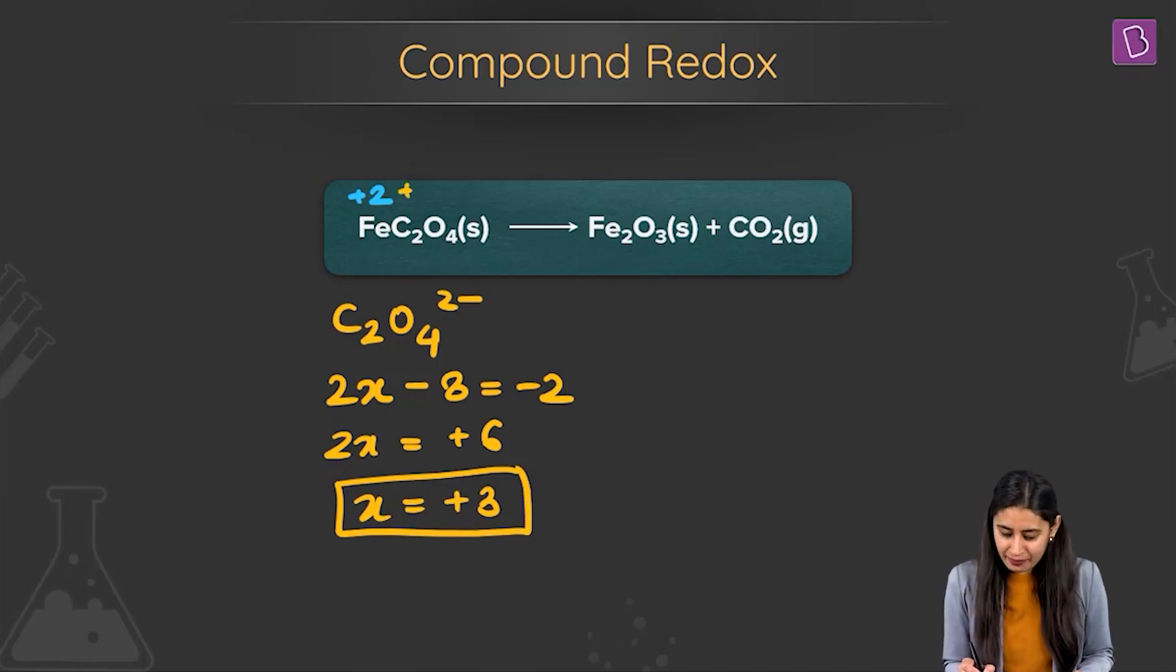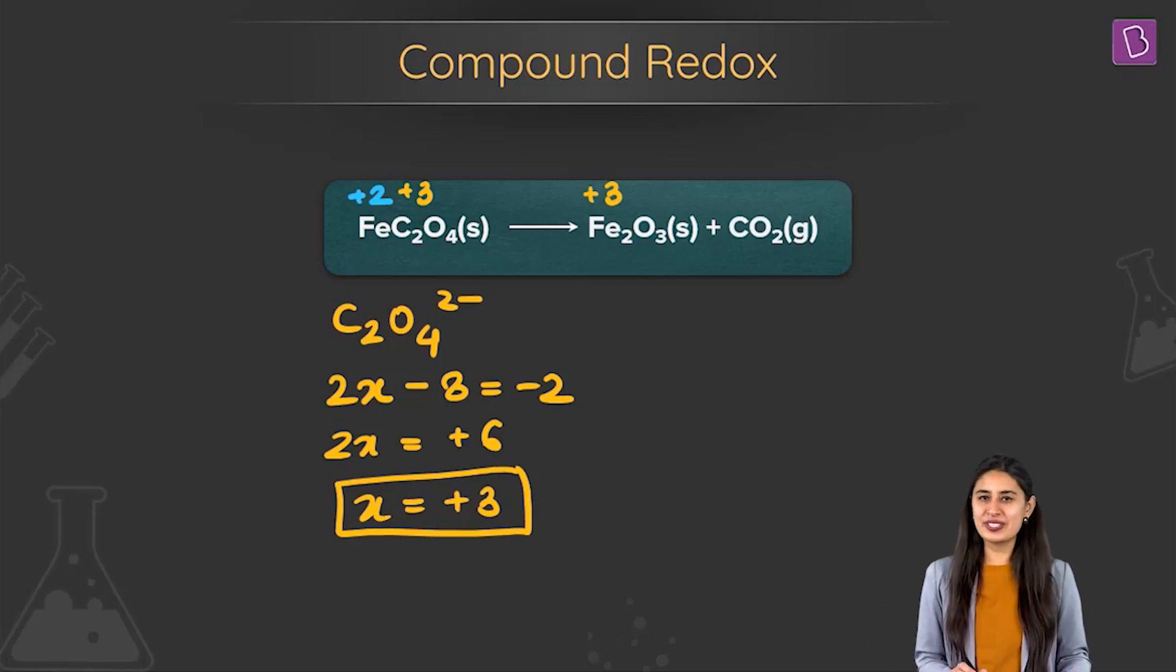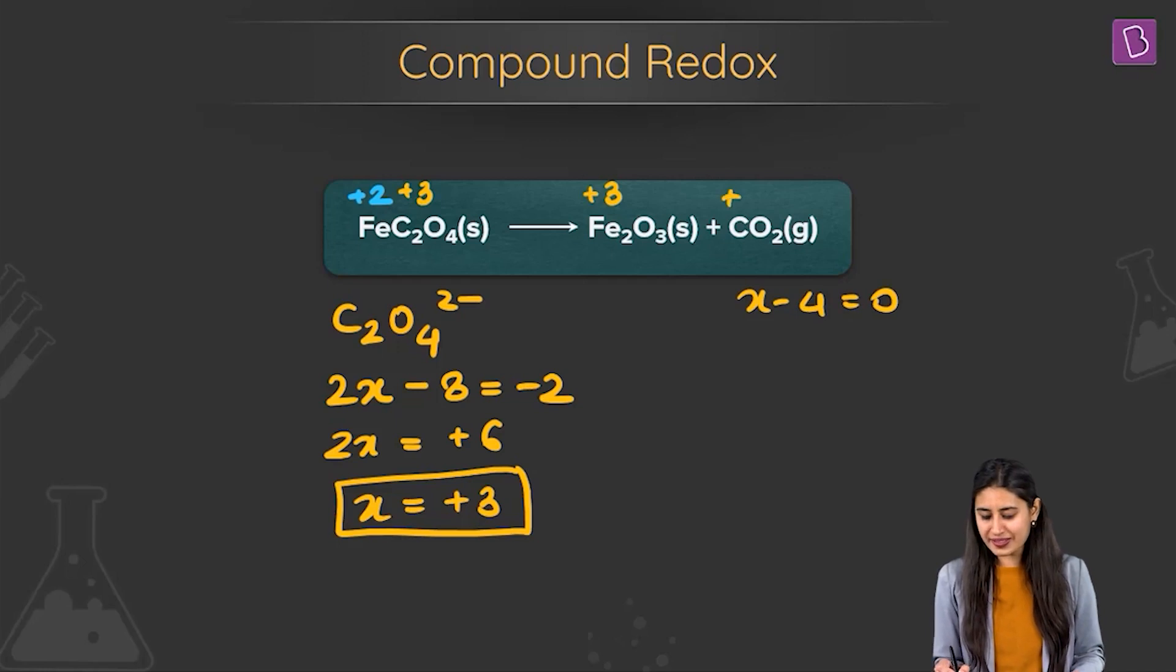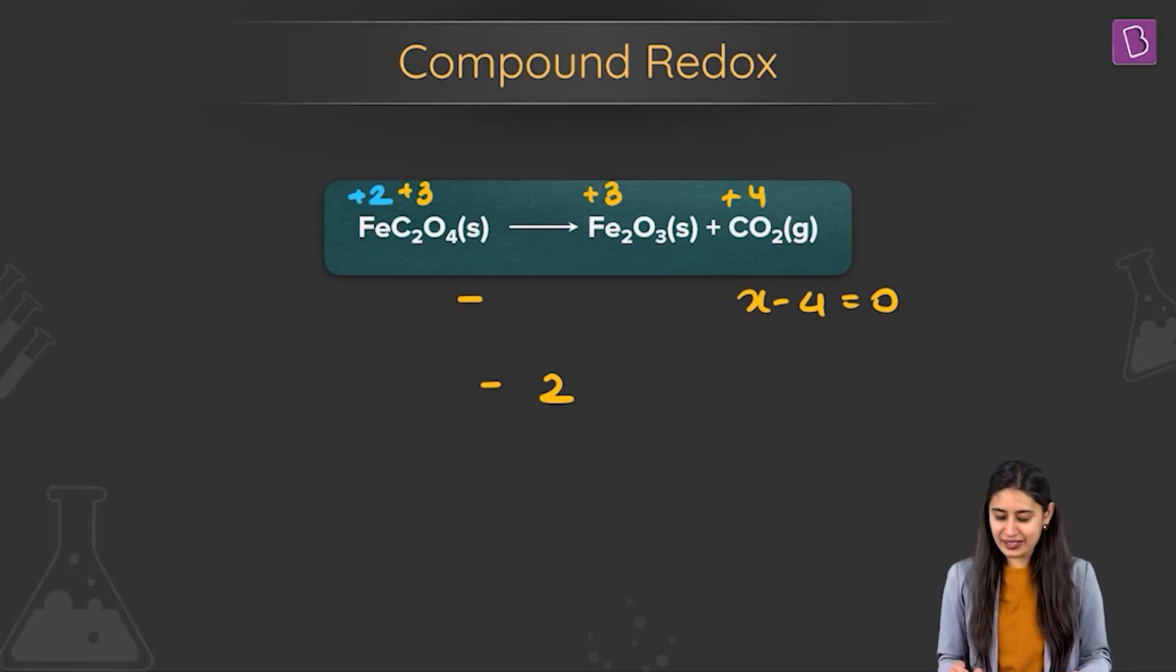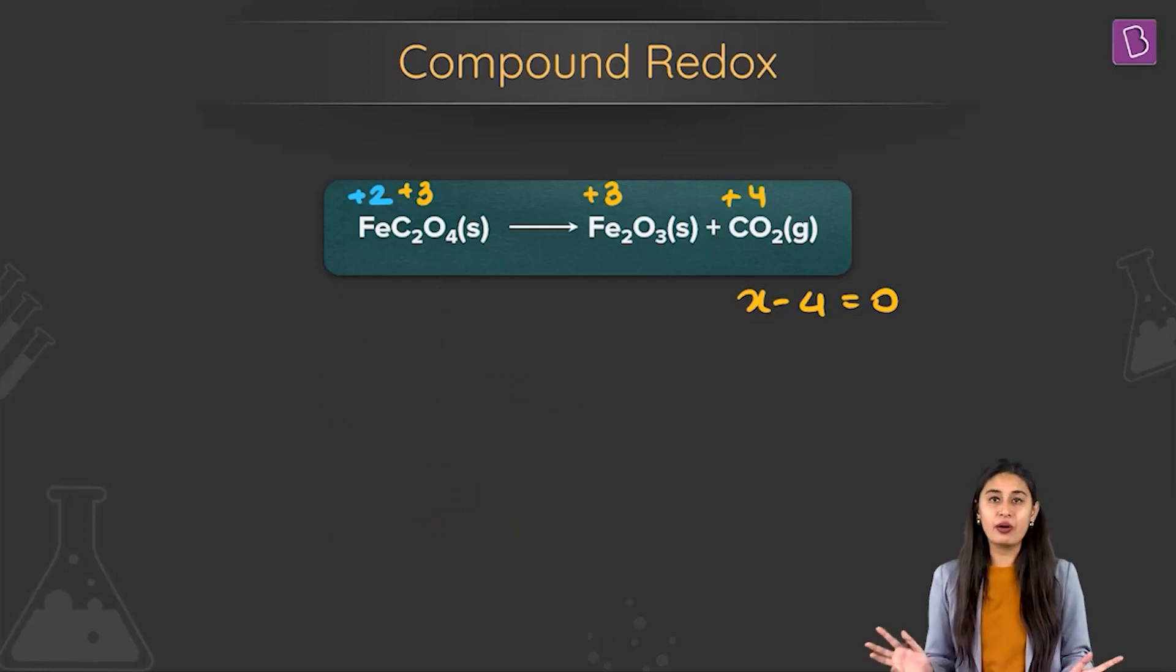So carbon is in plus 3 state. Now let's look at the products. Plus 3 here. Oxygen is oxide only, minus 2 only. In carbon dioxide, x minus 4 is equal to 0. So x is equal to plus 4. Now let's check what's at play. What is it that is so special about this kind of a compound redox?